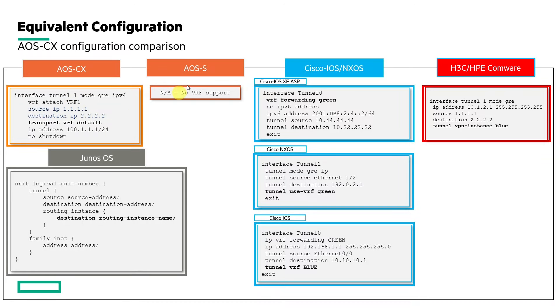This slide shows equivalent configurations from other vendors. For HPE AOS-S switches, there's no equivalent feature because VRFs aren't supported on that product line. For Juniper JunOS, you specify the routing instance and destination routing instance name. For Cisco IOS and NX-OS, the equivalent uses 'tunnel vrf blue' and 'tunnel use-vrf green.' For the Cisco IOS ASR device, you specify 'vrf forwarding green.' For H3C, you specify 'tunnel vpn-instance blue.'